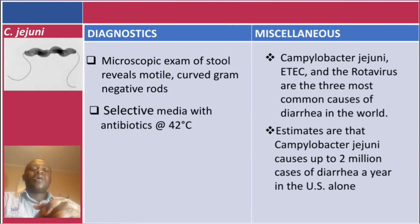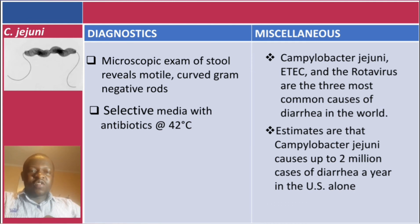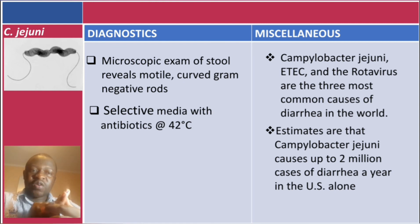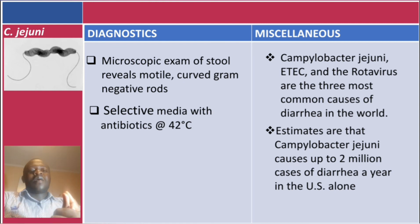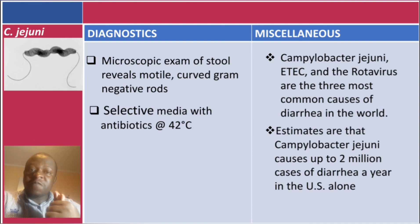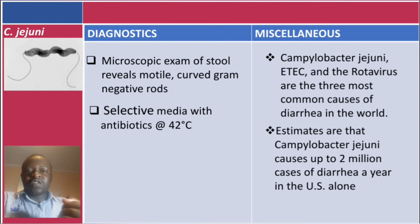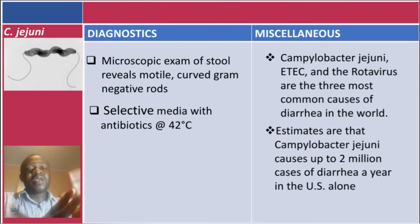To summarize the key points: Campylobacter jejuni has polar flagella on both ends, it grows at 42 degrees Celsius, it is invasive, and it causes secretory or bloody diarrhea. Those are the main things to remember about this bacteria.